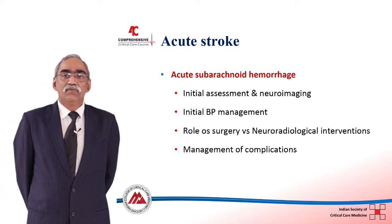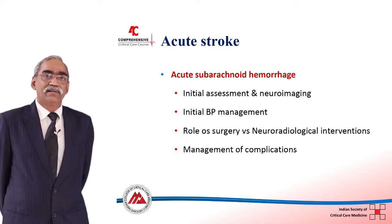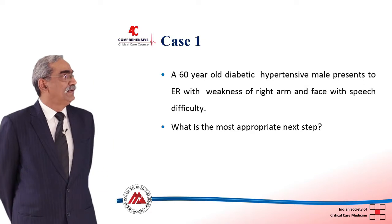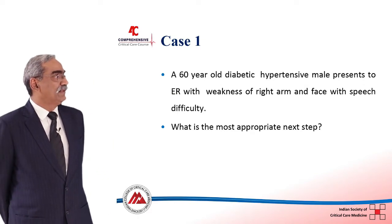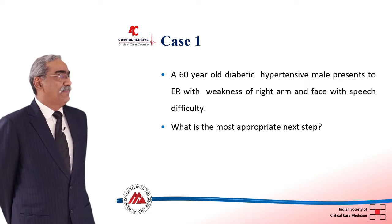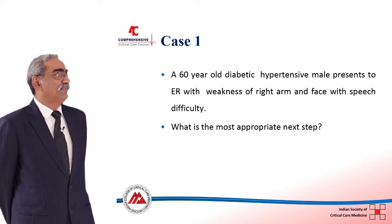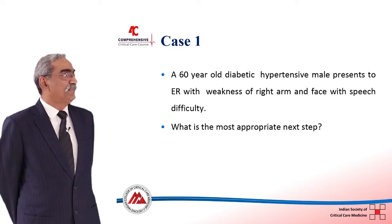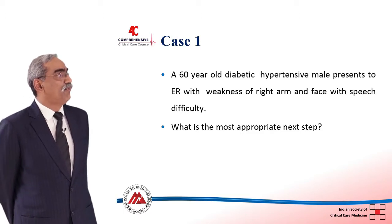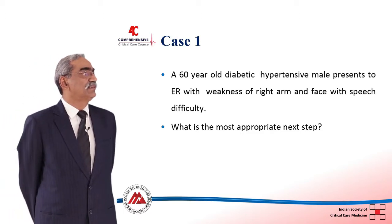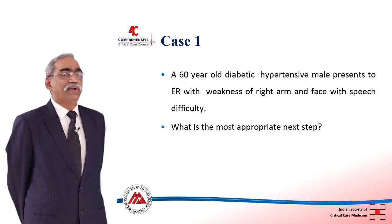So without much ado let us start with the first case. This is a 60 year old male, diabetic and hypertensive, who presented to the emergency room with weakness of the right arm and face with speech difficulty. What is the next most appropriate step?